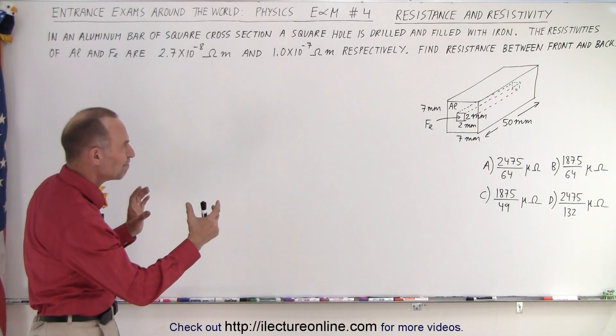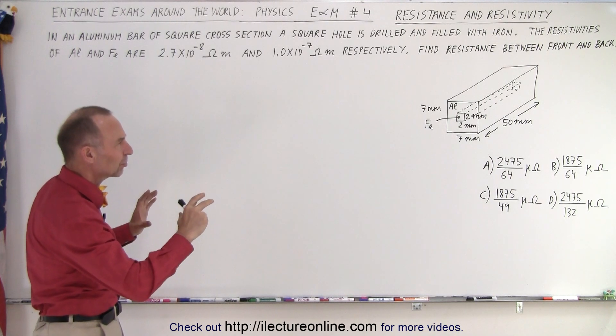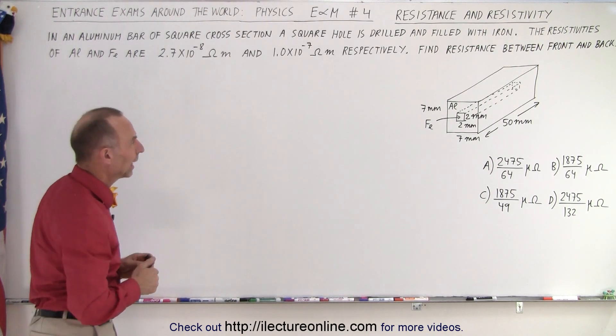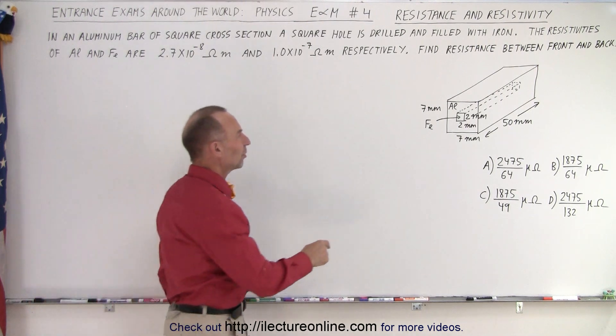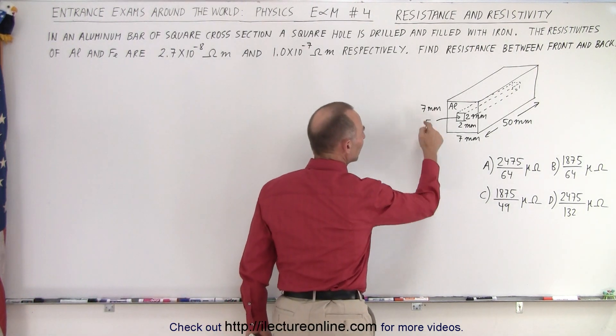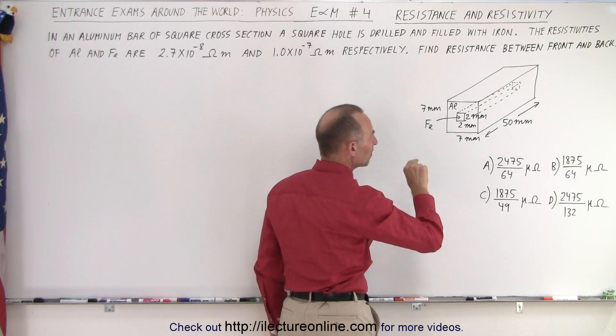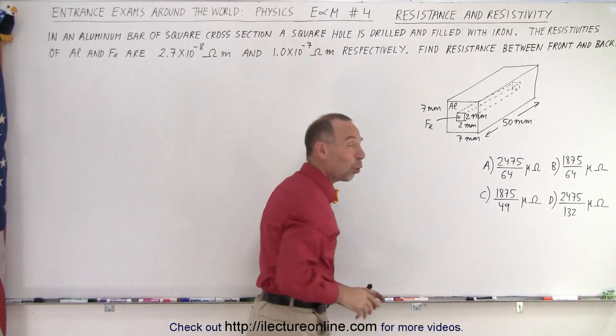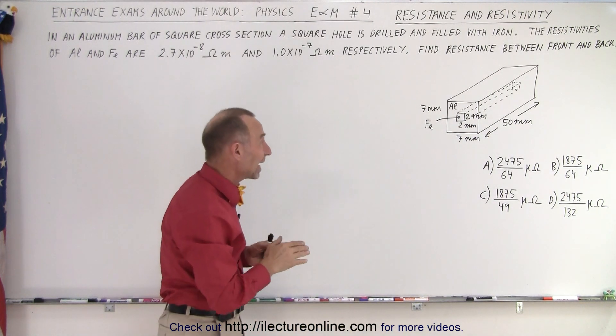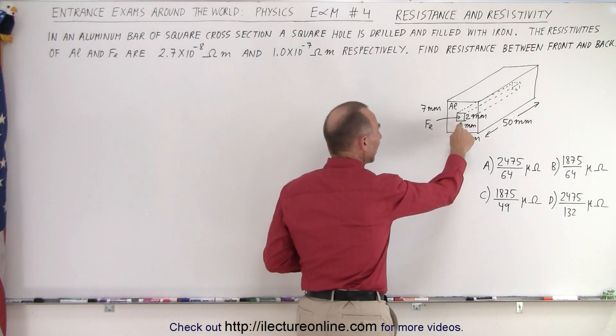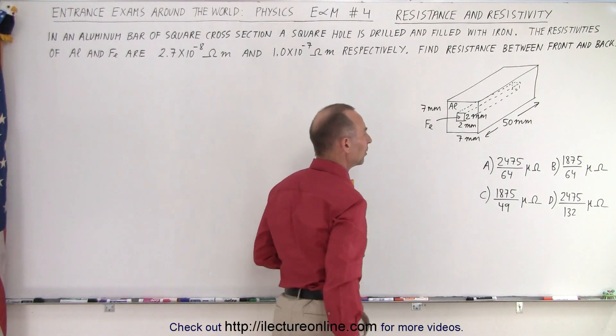So here we have a rectangular box made out of aluminum and the dimensions are 7 millimeters by 7 millimeters and it's 50 millimeters long. There's a square hole drilled inside of that and filled with iron, and that one is 2 millimeters by 2 millimeters.